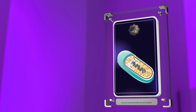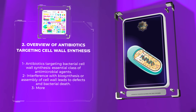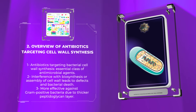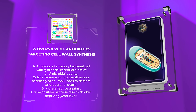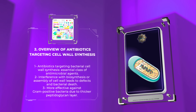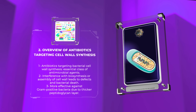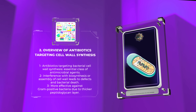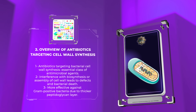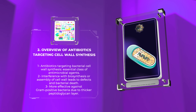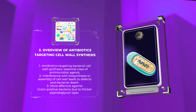Antibiotics targeting bacterial cell wall synthesis are an essential class of antimicrobial agents. They function by interfering with the biosynthesis or assembly of the bacterial cell wall, leading to cell wall defects and subsequent bacterial death. These antibiotics are particularly effective against gram-positive bacteria due to their thicker peptidoglycan layer compared to gram-negative bacteria.